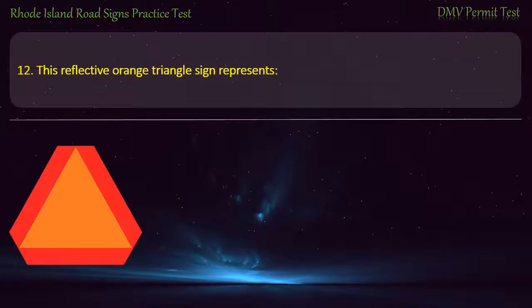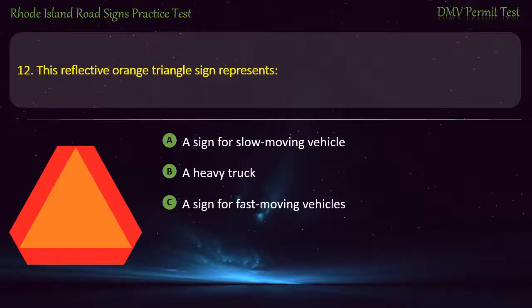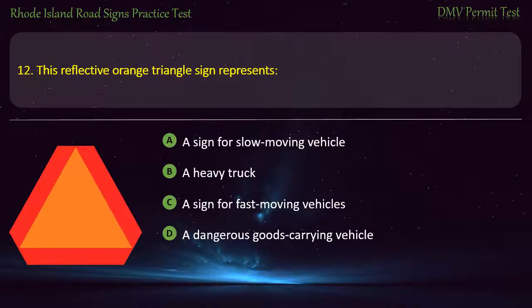Question 12. This reflective orange triangle sign represents: a sign for slow-moving vehicle, a heavy truck, a sign for fast-moving vehicles, a dangerous goods-carrying vehicle. Answer: A sign for slow-moving vehicle.